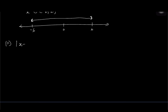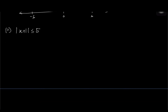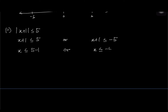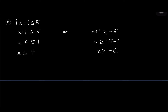Number 11: absolute of x plus 1 less than or equal to 5. Two statements: x plus 1 less than or equal to 5, and x plus 1 greater than or equal to negative 5. Solving: x less than or equal to 4 and x greater than or equal to negative 6. Combined solution set: negative 6 less than or equal to x less than or equal to 4.